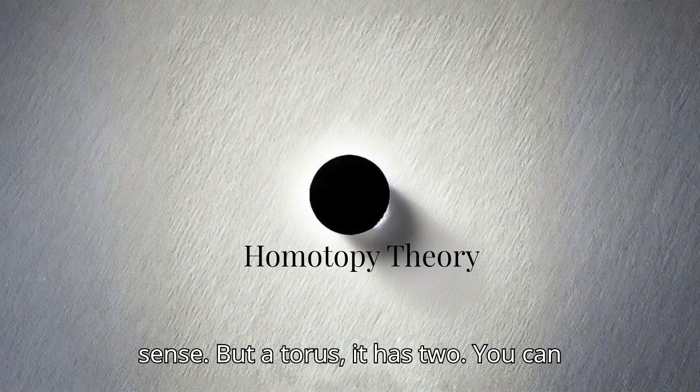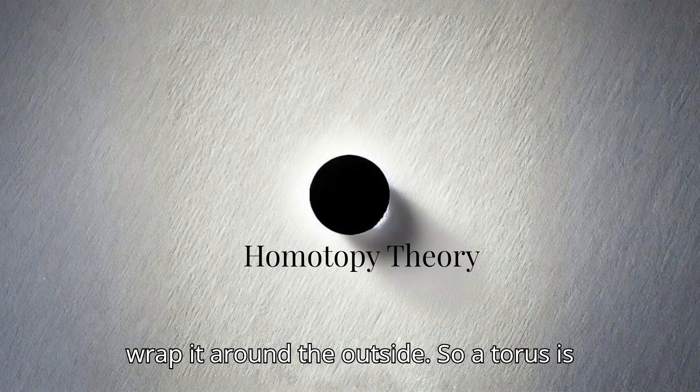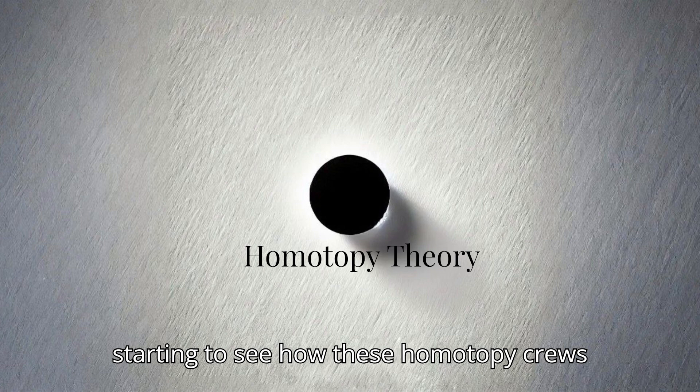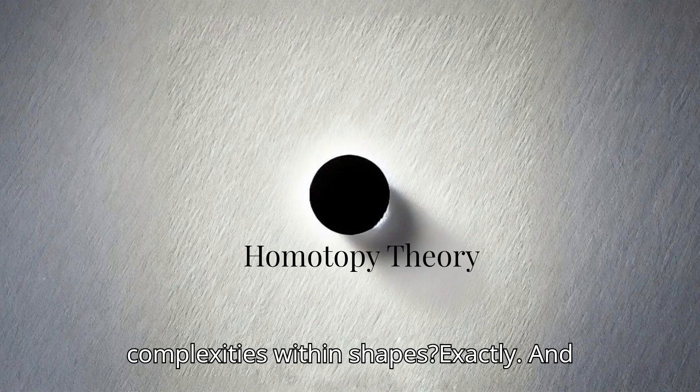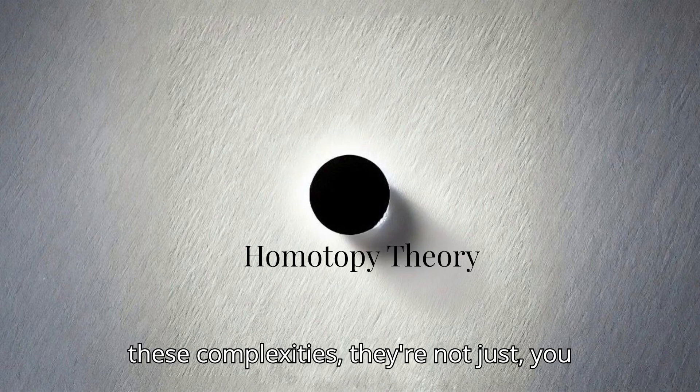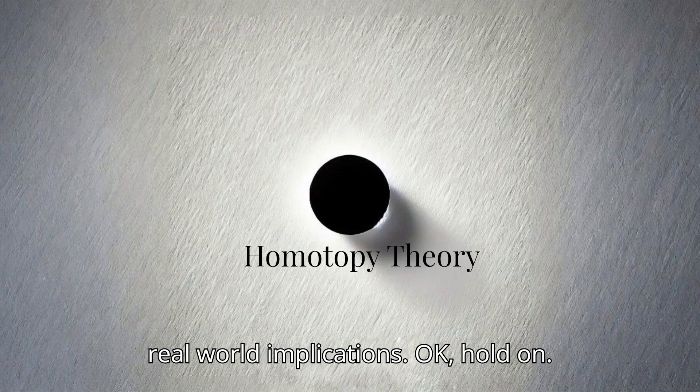Donuts, I'm listening. Now a circle only has one fundamental group, meaning there's really only one way to loop a string around it. All right, that makes sense. But a torus has two. You can loop a string through the hole in the middle. Oh, right, of course. Or you can wrap it around the outside. So a torus is like a double loop champion. I'm starting to see how these homotopy groups can reveal hidden complexities within shapes.